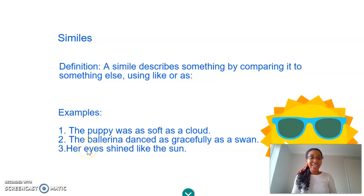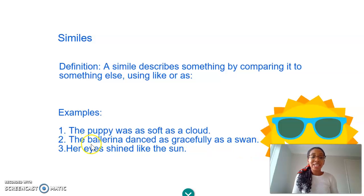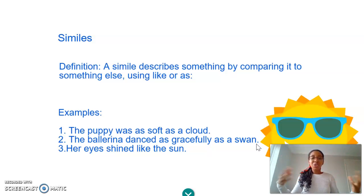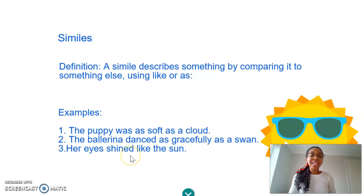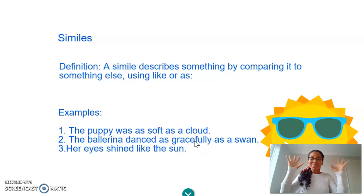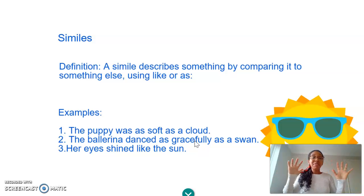The next example: the ballerina danced as gracefully as a swan. So what's being described here? That's correct — it's the ballerina. And what is the ballerina being compared to? Yes, she's being compared to a swan. And you can imagine this ballerina dancing around so graceful, just like an elegant swan. The third example: her eyes shined like the sun. It's big and bright and shiny. So you can imagine someone with big sparkly eyes, just like the sun — you have a picture of this person in your head, and you think of them by comparing them to the sun using the word 'like'.